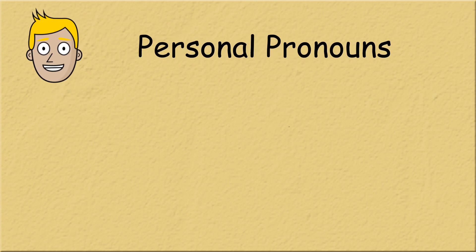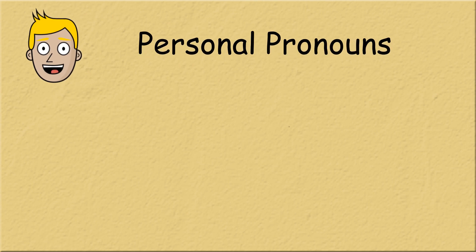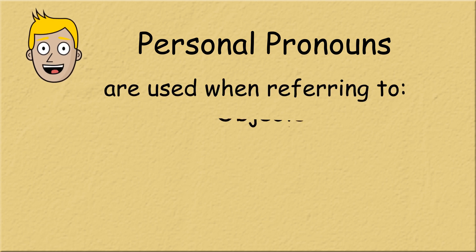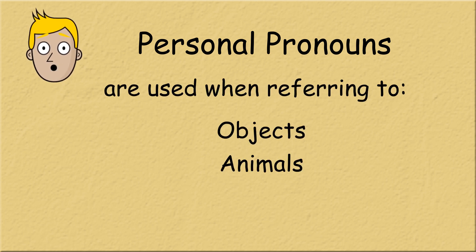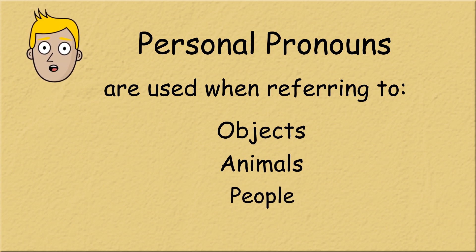Just a quick recap. Personal pronouns are pronouns we use when referring to nouns in the telling part of a sentence. We use them when referring to objects, animals and people. We decide which personal pronouns we use depending on who we are talking about.